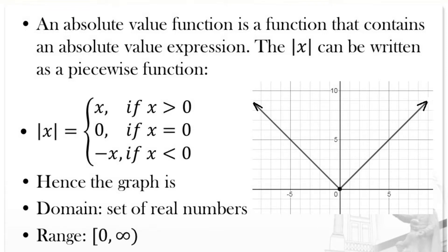The graph looks like a V-shape. The domain is the set of all real numbers — the domain of an absolute value function is always the set of real numbers. The range will be based on the given graph. In this particular graph, the range is from 0 to positive infinity.